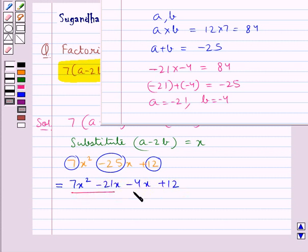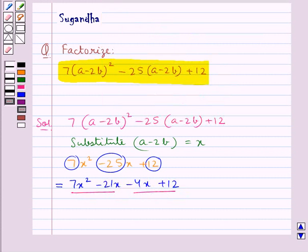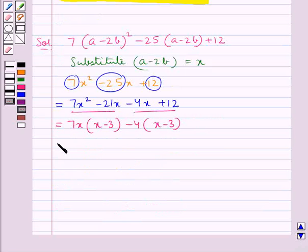Now these are the two groups formed. From the first group we take out 7x common, leaving (x-3). From the second group we take out -4 common, leaving (x-3). This is further equal to (x-3)(7x-4).